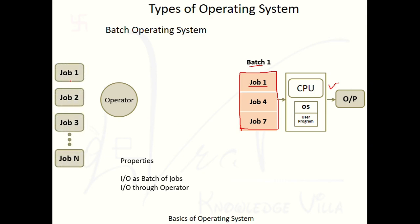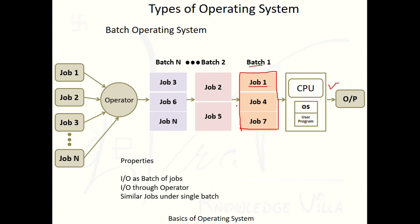Suppose there are various jobs available. What the operator will do is make similar jobs under a single batch. The operator will collect all the jobs and convert them into separate batches. The operator will look at whatever jobs have similar characteristics and put those jobs into a single batch.